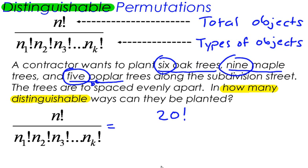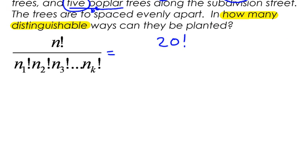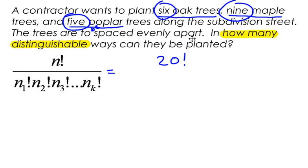Now let's go to each individual object, or in this case, trees. I want to divide this by the product of n sub 1 factorial. Well, I have 6 oak trees, so this would be 6 factorial, times n sub 2, I have 9 maple trees, so this would be 9 factorial. And then finally, I have 5 poplar trees, and that would be 5 factorial. There are no other trees.